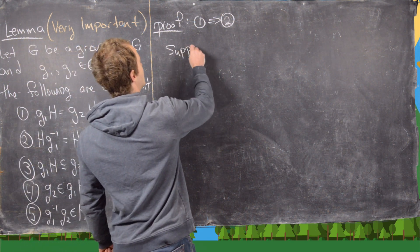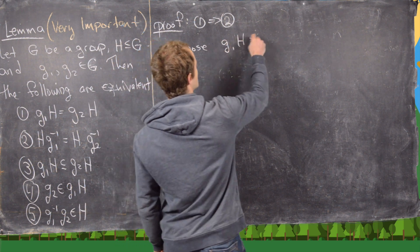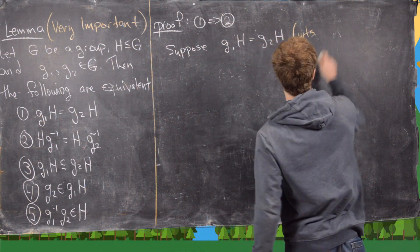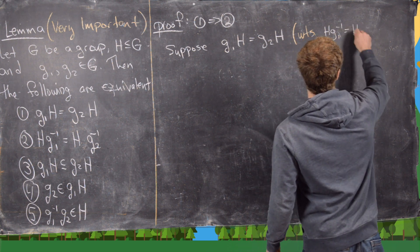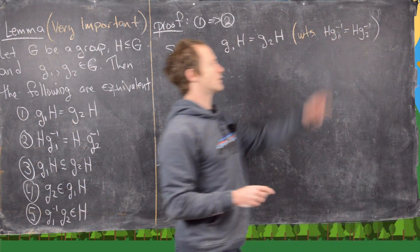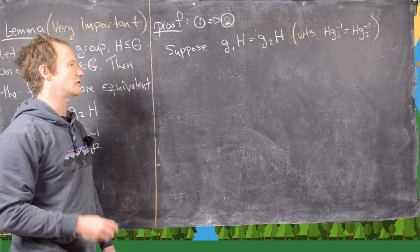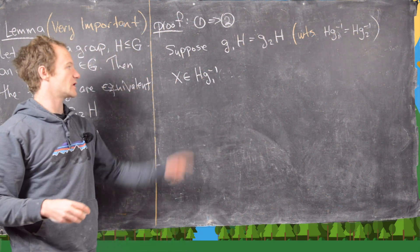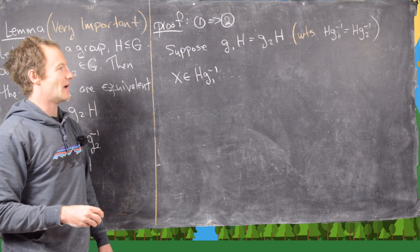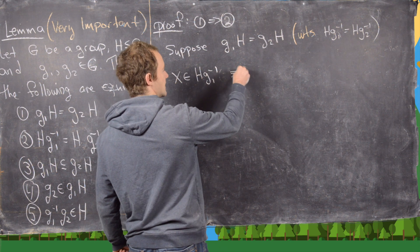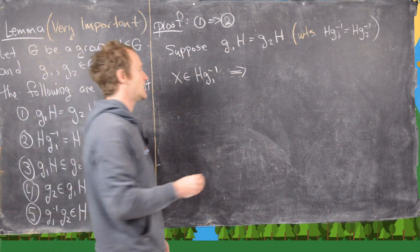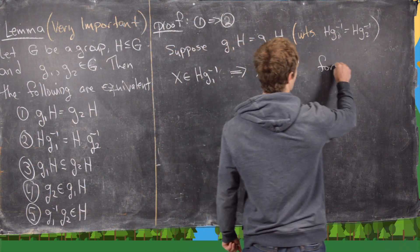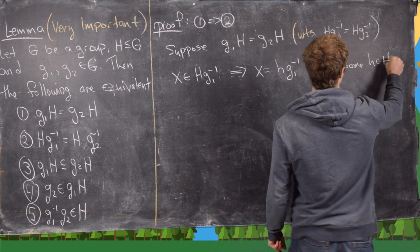So let's do one to two. We want to suppose that the two cosets are the same: g1H equals g2H. From this, we want to show that Hg1⁻¹ equals Hg2⁻¹. Since those are cosets, we'll do that by set inclusion. So let's take an x in Hg1⁻¹ and show that x is in Hg2⁻¹. If x is in Hg1⁻¹, that means x can be written as little h times g1⁻¹ for some little h in our subgroup.